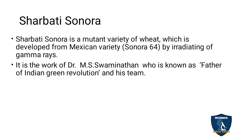For example, Sharbati Sonora is a mutant variety of wheat developed from the Mexican variety Sonora 64 by irradiating gamma rays on the wheat plant. This work was done by M.S. Swaminathan, who is called the father of the Indian Green Revolution. His team applied gamma rays to the wheat variety and obtained Sharbati Sonora.